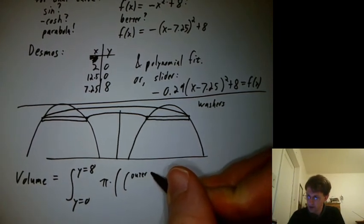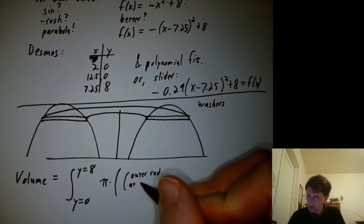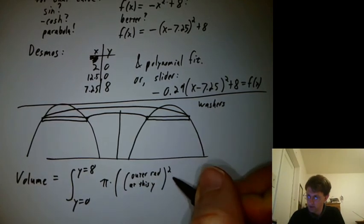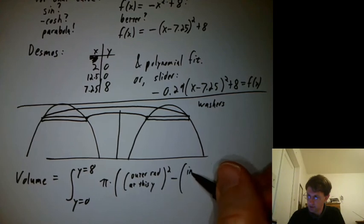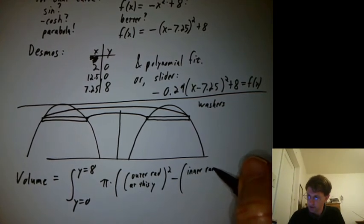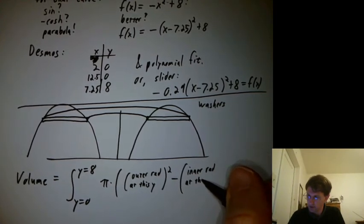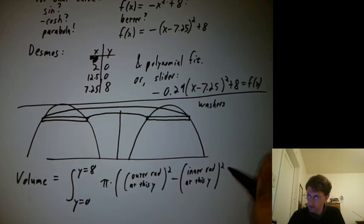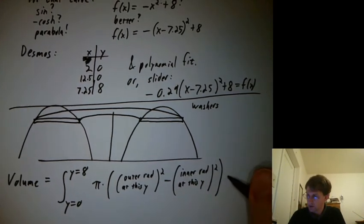It was the outer radius squared minus the inner radius squared. So the outer radius at this y value squared minus the inner radius at this y value squared dy.